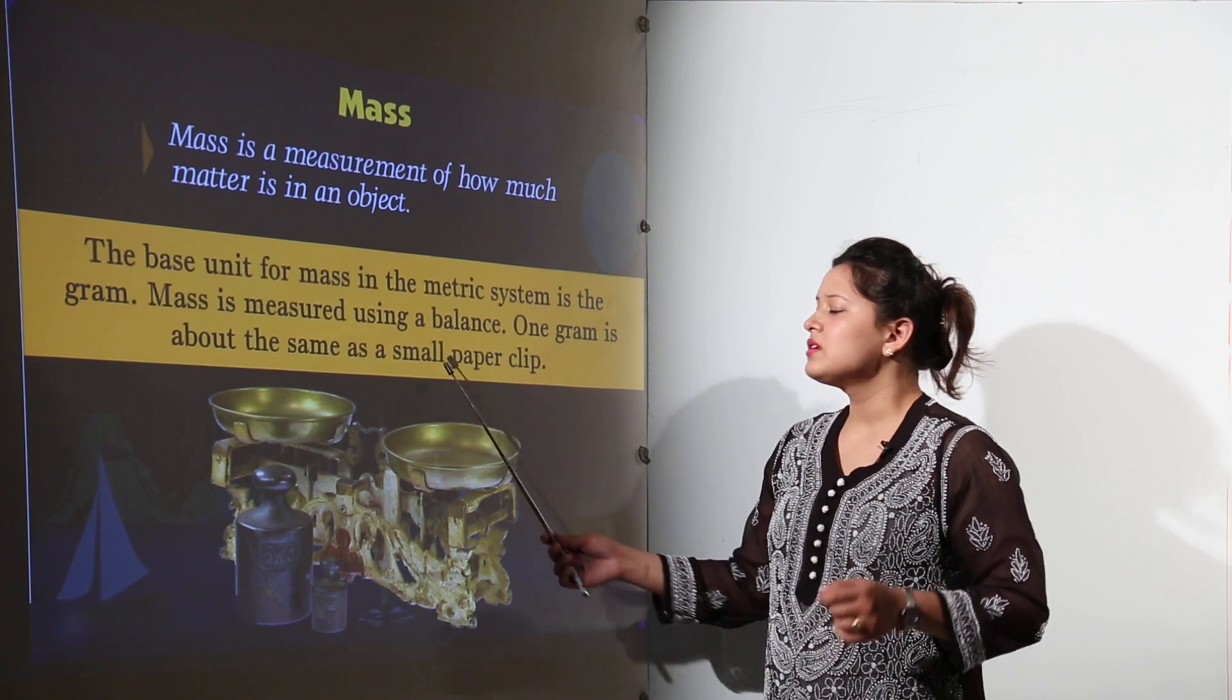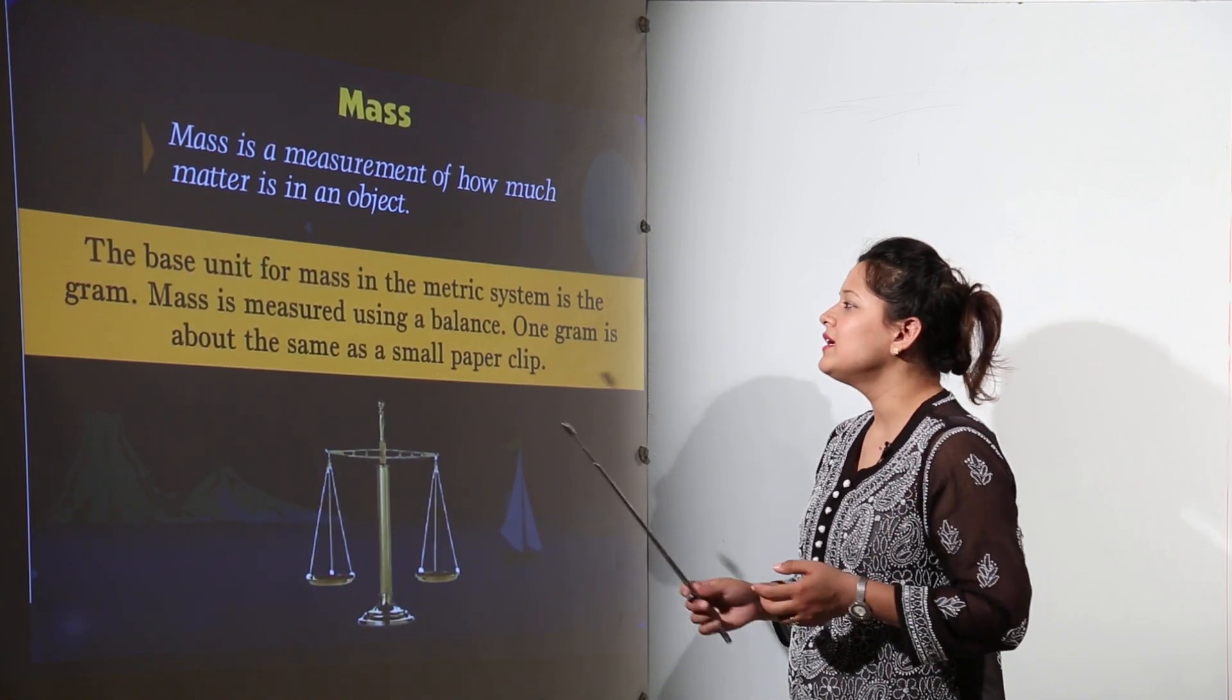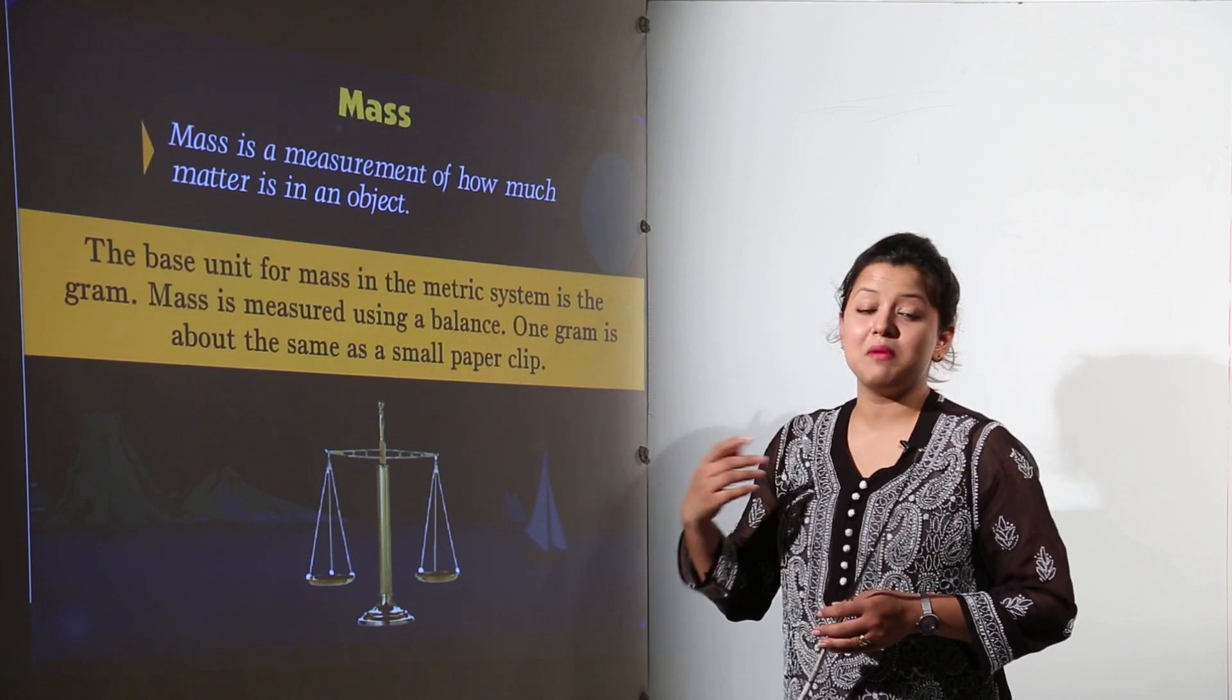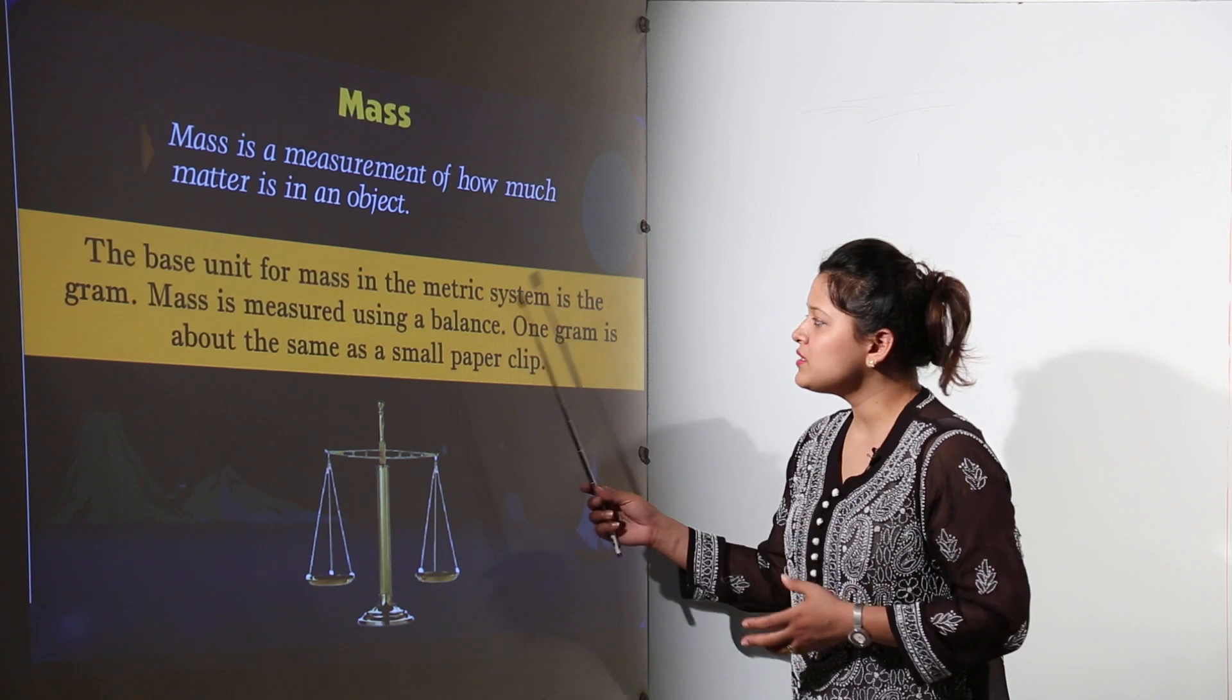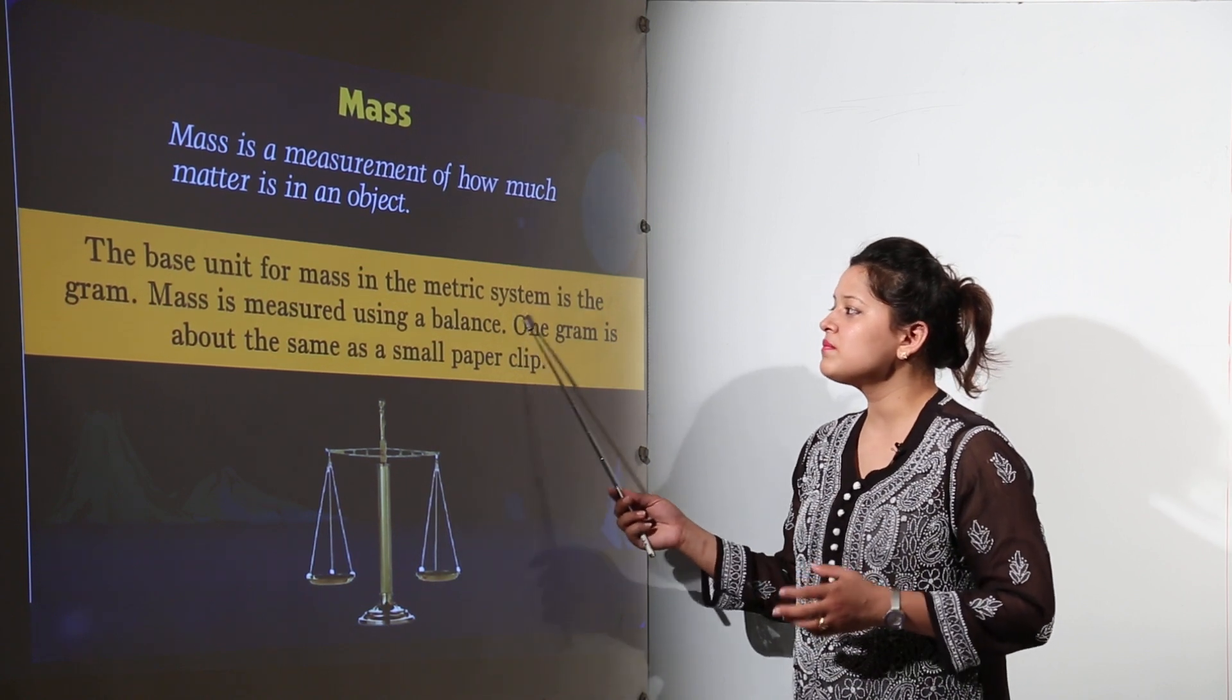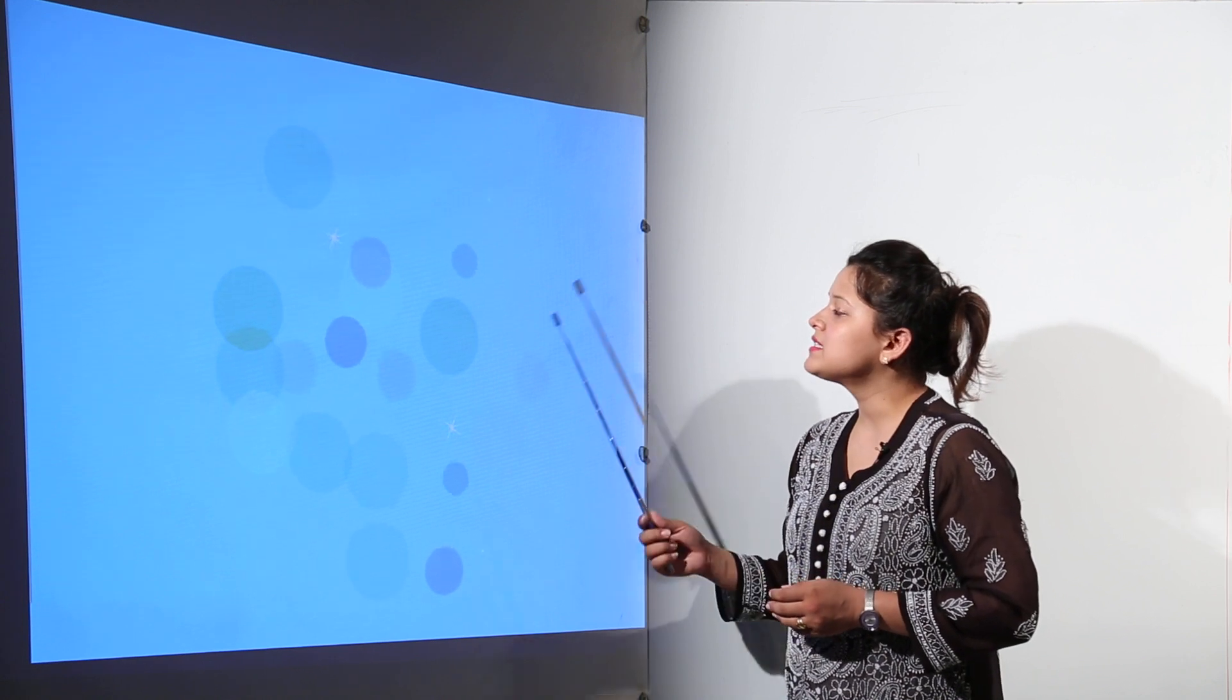So 1 gram would be equal to same as the small paper clip's mass. So ideally see mass can be measured in many units. We get kilograms and so on. But the base unit according to metric system for measuring mass would be grams only.